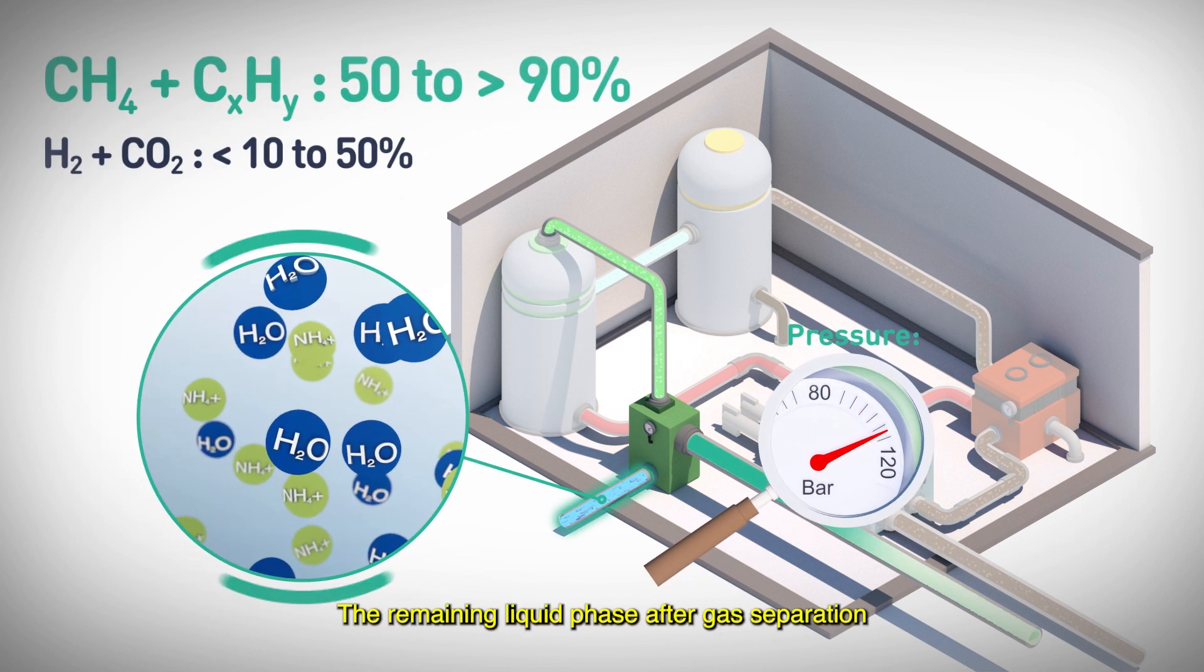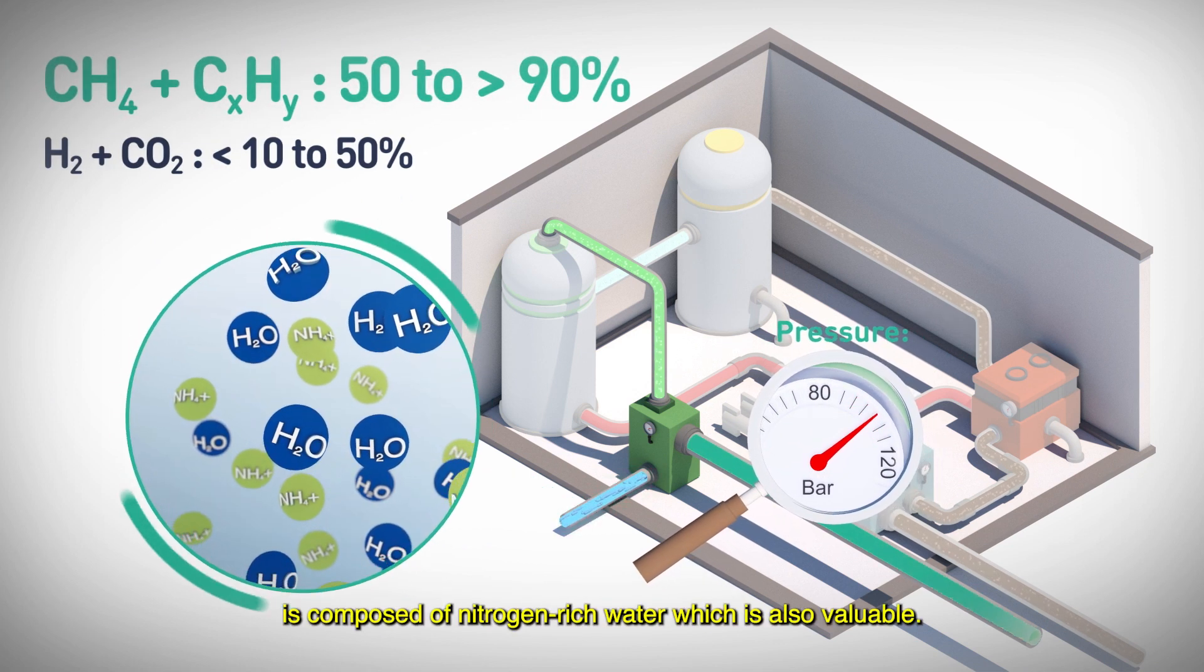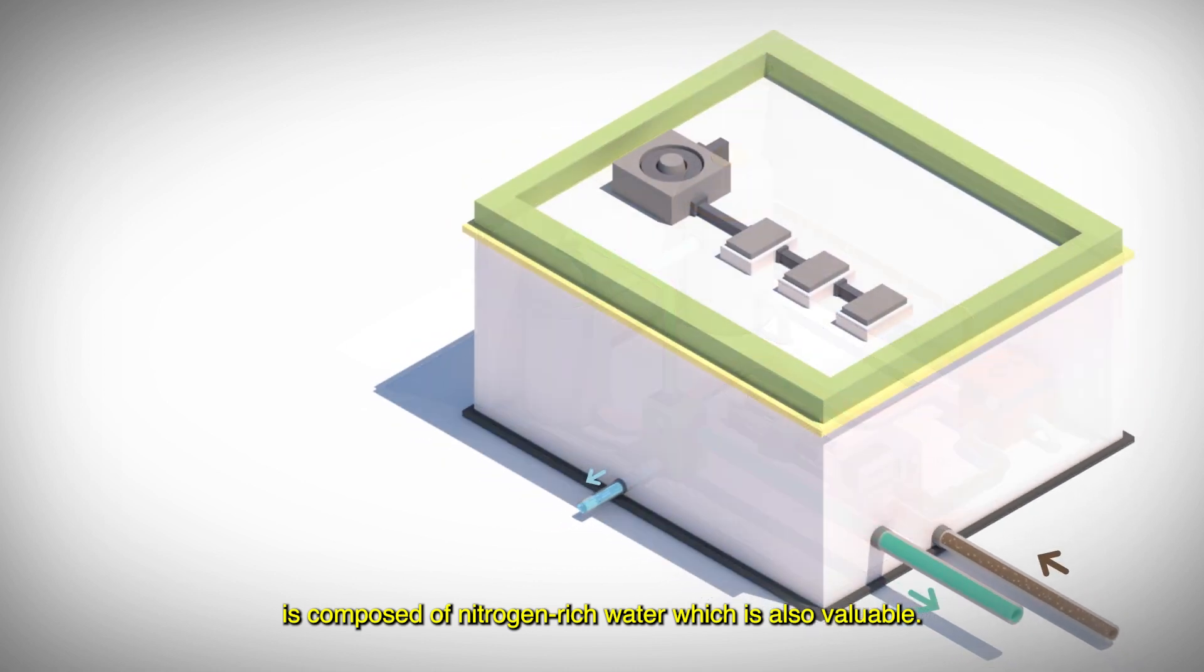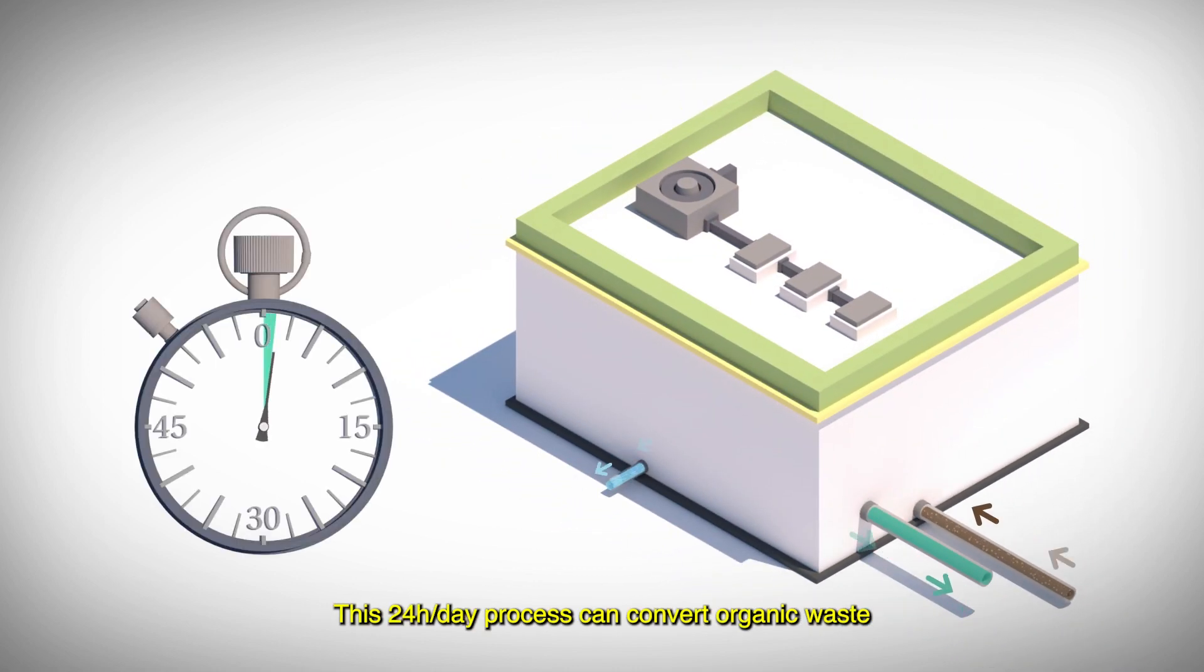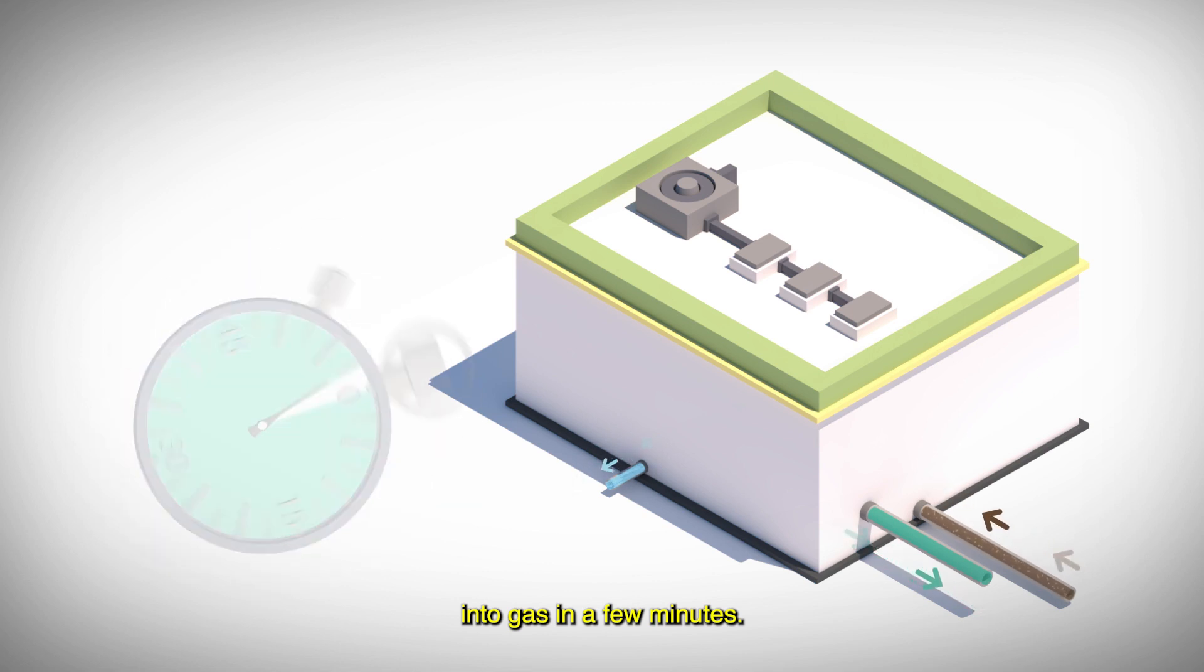The remaining liquid phase after gas separation is composed of nitrogen-rich water which is also valuable. This 24-hour day process can convert organic waste into gas in a few minutes.